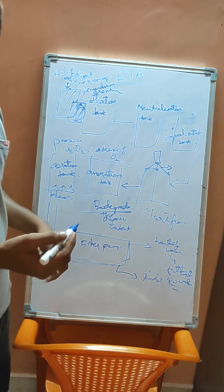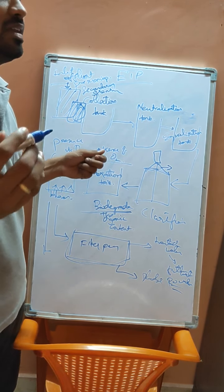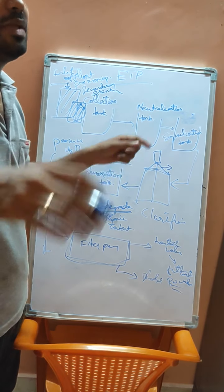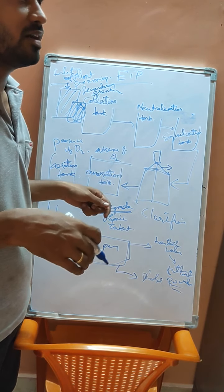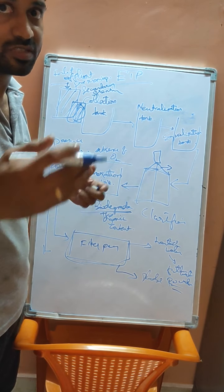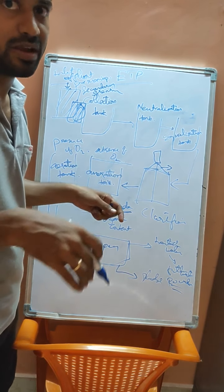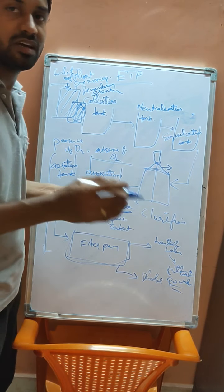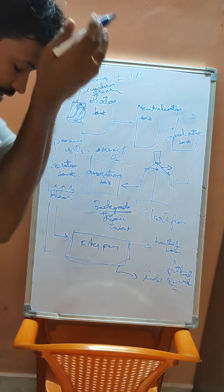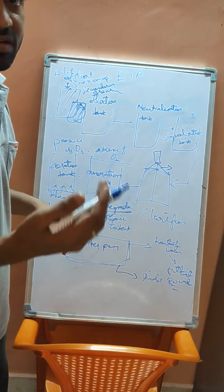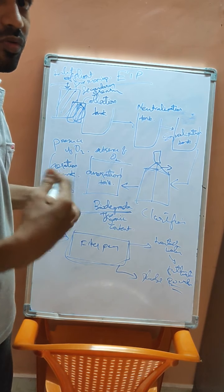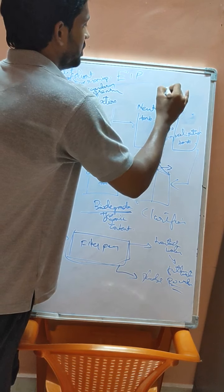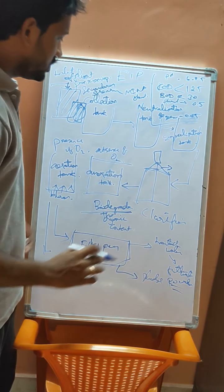In SIPCOT areas, the treated water from individual industries is sent to the main ETP plant under the control of SIPCOT. The overall SIPCOT ETP plant handles further processing. To meet disposal standards, we need to know what parameters are permitted for effluent disposal.